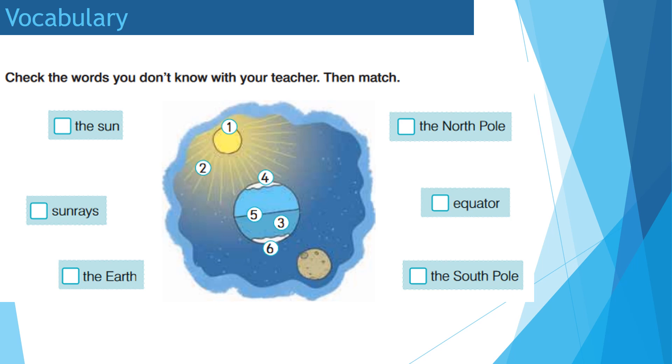Look at the picture and let's try to match the words with the picture together. Number one is the sun. That's right. Number two are sun rays. Well done. Number three is the planet Earth. Number four is the North Pole. That's right. Number five is equator. And the last one, number six, is the South Pole. Well done, children.